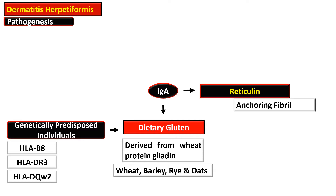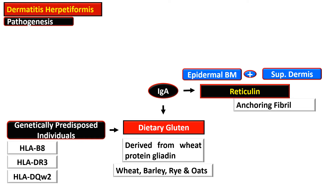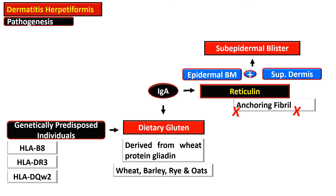These IgA antibodies cross-react with reticulin, which is the anchoring fibril. This anchoring fibril joins the epidermal basement membrane with the superficial dermis. So when this anchoring fibril is disturbed, there is development of a sub-epidermal blister.